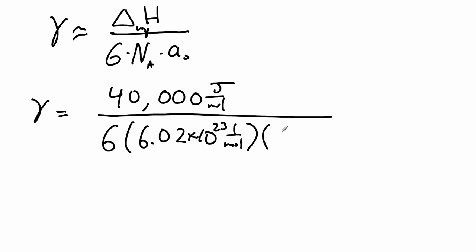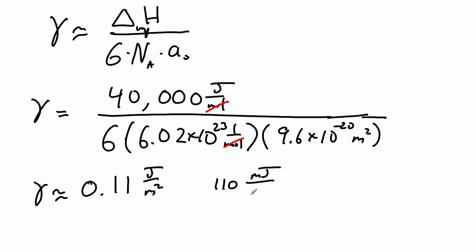And then we divide finally by the area of a single molecule at the surface, which we said was 9.6 times 10 to the negative 20 meters squared. We're going to get a canceling of the per moles, and we're just going to get joules per meter squared, which is our surface tension unit. This comes up to 0.11 joules per meter squared, or we could just say that is 110 millijoules per meter squared, our typical surface tension unit.